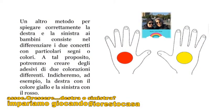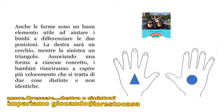Un altro metodo per spiegare correttamente la destra e la sinistra ai bambini consiste nel differenziare i due concetti con particolari segni o colori. A tal proposito potremo mettere degli adesivi di due colorazioni diverse: indicheremo ad esempio la destra con il colore giallo e la sinistra con il colore rosso. Oppure con le forme, che sono un buon elemento utile ad aiutare i bambini a differenziare le due posizioni: la destra sarà un cerchio mentre la sinistra un triangolo. Associando una forma a ciascun concetto, i bambini riusciranno a capire più velocemente che si tratta di due cose distinte e non identiche.